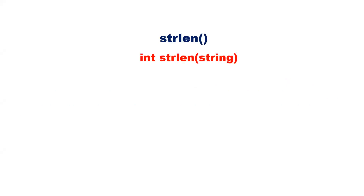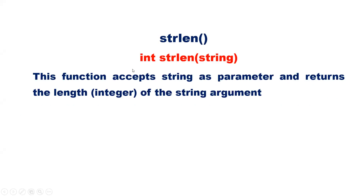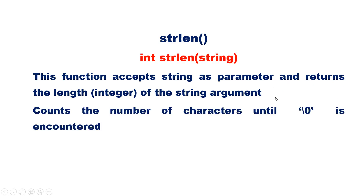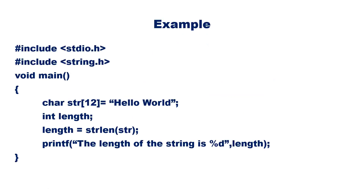The first one is strlen. This is the prototype — this function accepts a string as the parameter and returns the length of the string argument. It counts the number of characters until '\0' is encountered. It does not include '\0', but the remaining characters will be counted. For example, str is equal to "hello world".